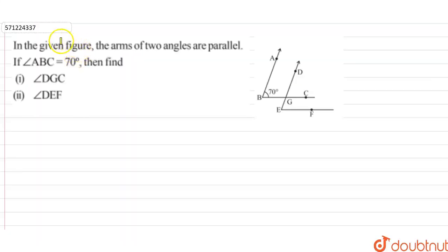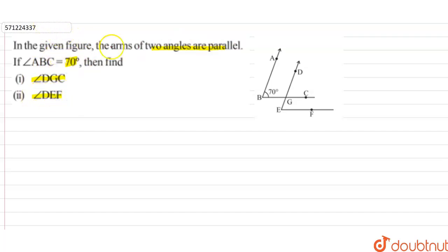Hi students. In this question it is given that in the figure, the arms of two angles are parallel. If angle ABC is equal to 70 degrees, find angle DGC and angle DEF.